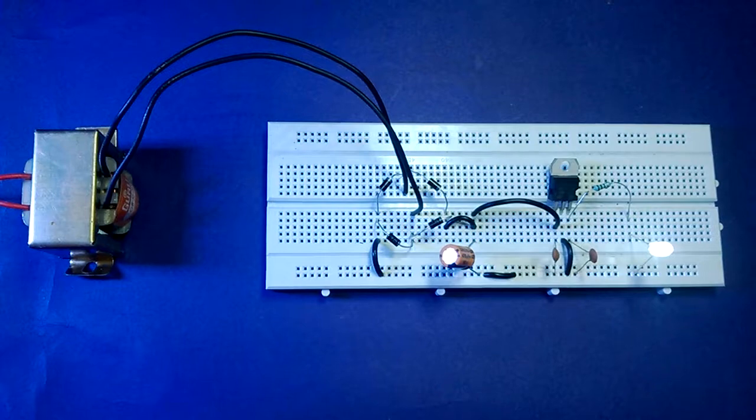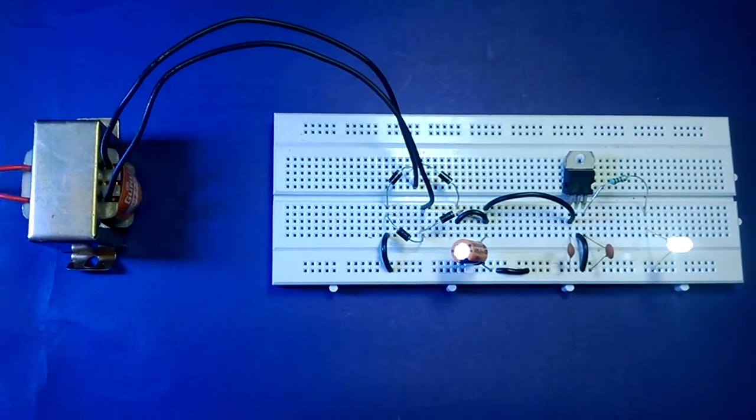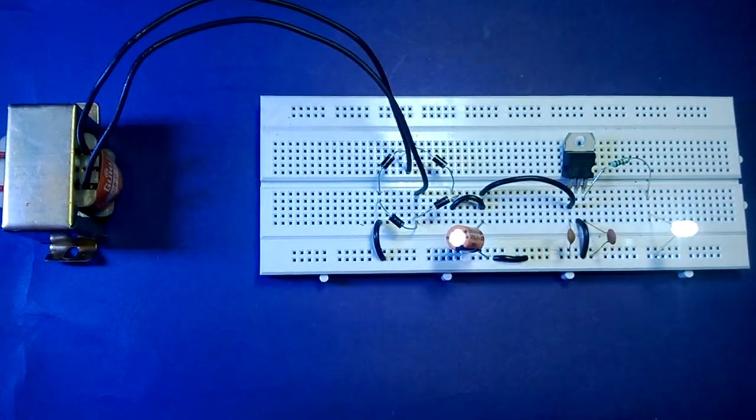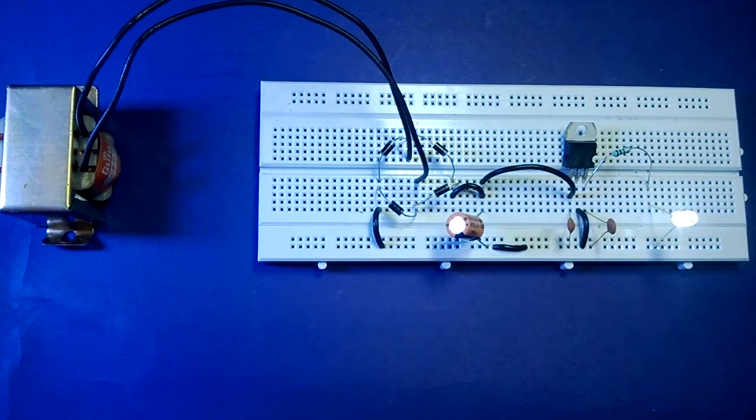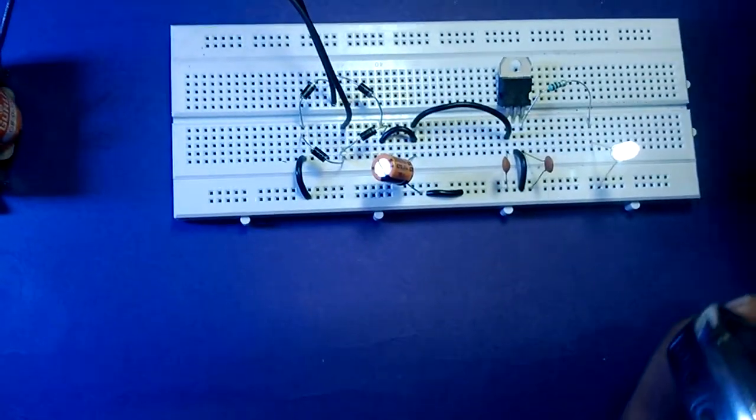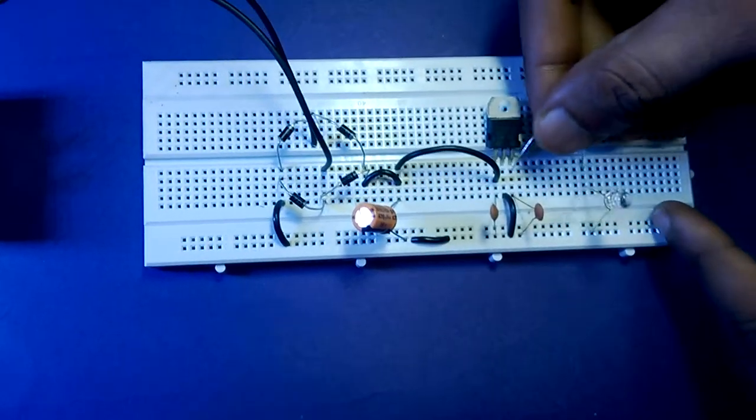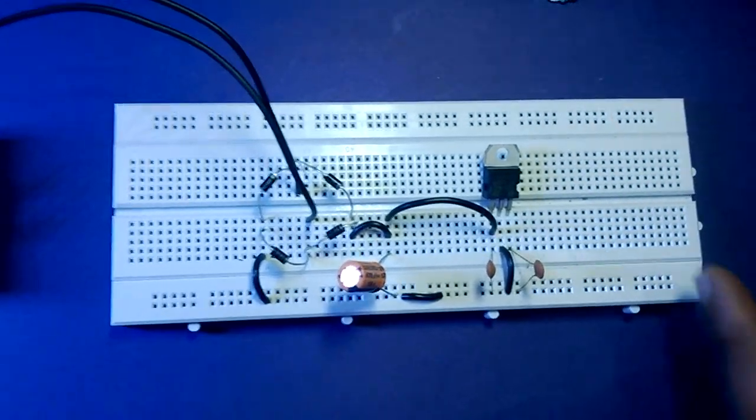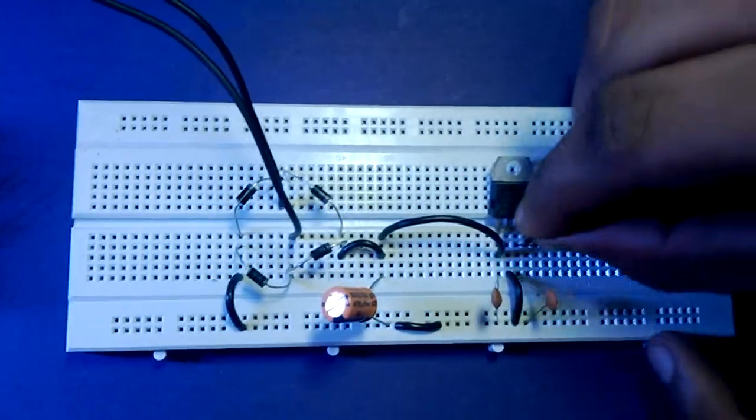So what we are going to do now is charge a cell phone using this mobile charger. Look, we are connecting the wires. This is the positive terminal, and I'm going to remove this resistance because we are connecting it with the mobile charger.